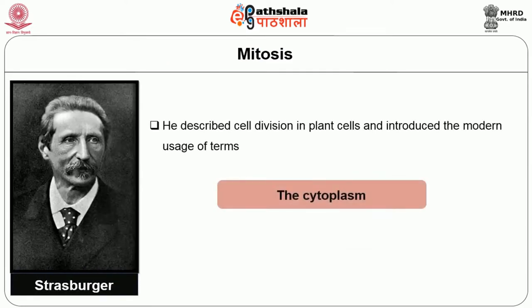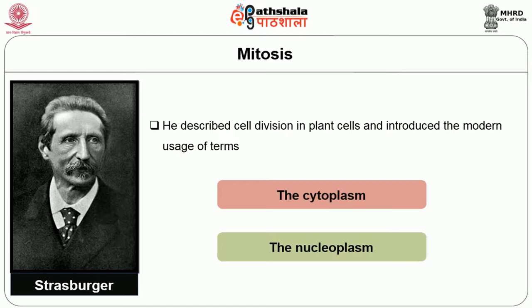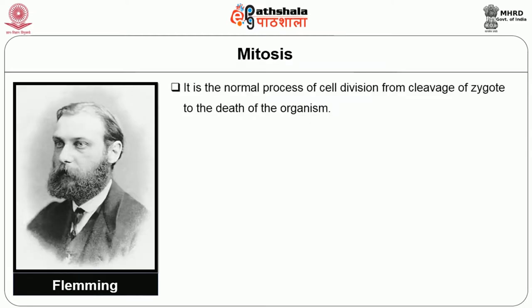Mitosis: 'mito' means thread, 'osis' means production, referring to the maintenance of chromosomal continuity and diploid number. Strasburger in 1882 described cell division in plant cells and introduced the modern usage of terms cytoplasm and nucleoplasm. In the same year, Fleming, a German biologist, also gave the term mitosis. It is the normal process of cell division from cleavage of the zygote to the death of the organism.